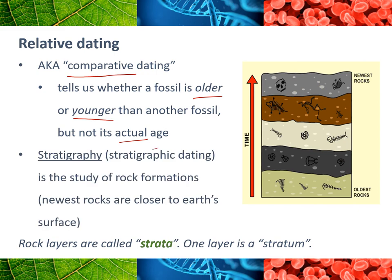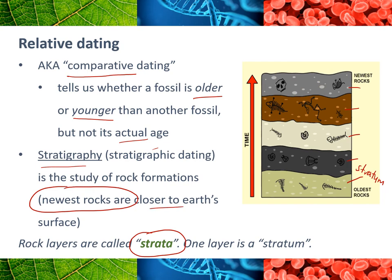There's a term for this called stratigraphy or stratigraphic dating. Rock layers when they form are called strata, which is where the term stratigraphy comes from. Each of these layers is called a stratum — singular — and together we would call those strata. The key thing here is that the newest rocks form closer to the Earth's surface. Rocks form either by sediment being laid down or things like volcanic ash that dries up and forms rock. So down here we've got the oldest layers of earth, and up here we've got the youngest or newest layers.